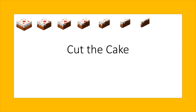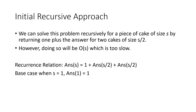Welcome to the editorial for 'Cut the Cake.' Tyler starts with a cake of size s, cuts it into two equal pieces, and each resulting piece into two equal pieces, until all pieces are of size one. Cuts follow integer division — a piece of size 5 becomes two pieces of size 2. A naive recursive solution would track both branches of the recursive tree, yielding O(s) time, which is too slow since s can be up to 10^9.